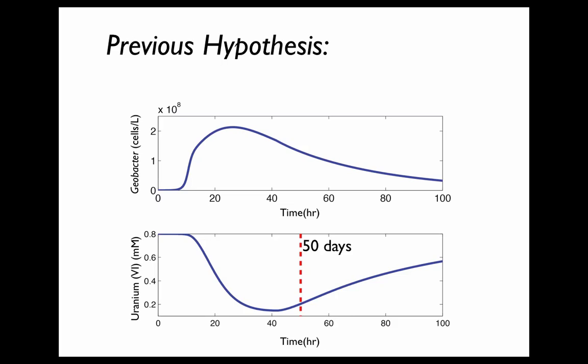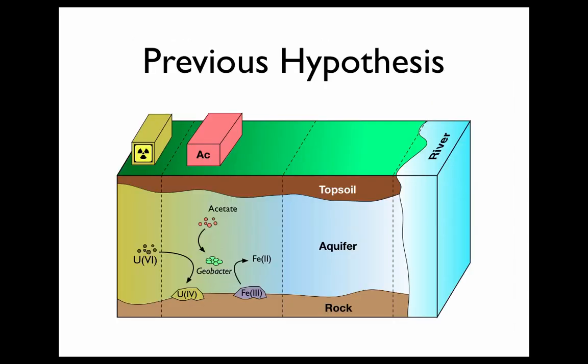Previously, it's been hypothesized that this is due to competition with sulfur-reducing bacteria. The idea is that sulfur-reducing bacteria, which also oxidize acetate, are able to outcompete Geobacter for the acetate, thus preventing the reduction of Uranium-6 by Geobacter and leading to the termination of bioremediation.